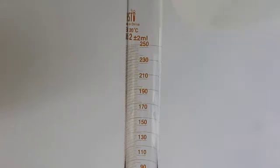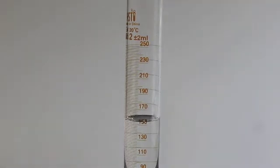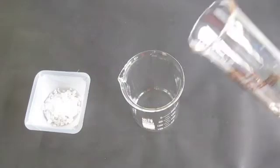Now, in a graduated cylinder, measure out significantly less solvent than the desired volume of your end solution. Since I want 200 milliliters of solution, I have measured out 150 milliliters of water.